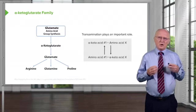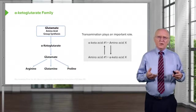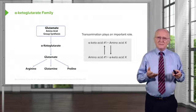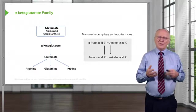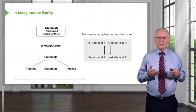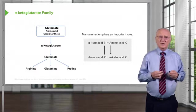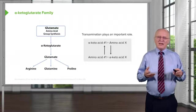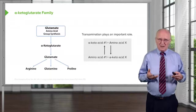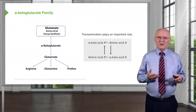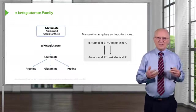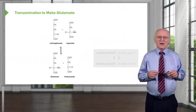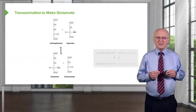Transamination occurs when alpha-ketoglutarate is converted into an amino acid, and that requires a donor of an amine group, described here as amino acid X. After donating its amine group, amino acid X becomes an alpha-keto acid. So we see these swapping. Let's take a look at what actually happens in the process.